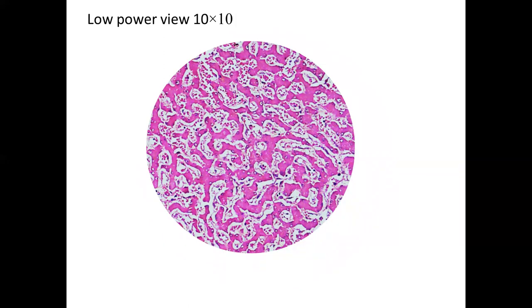Here you see a liver tissue slide in low power (10x). You can see the hepatocytes — plates of hepatocytes — all stained pink because of their cytoplasm, with small purple-stained nuclei. In between the cells, you see a special type of capillary called a sinusoid, which is lined by endothelial cells and contains blood. Between the hepatocytes, you get sinusoids with red blood cells visible inside them.